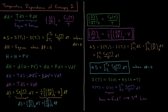We can go through a similar derivation to the previous video on the temperature dependence of entropy, and we end up with an expression for dS as a function of temperature and pressure: dS equals the constant pressure heat capacity divided by T times dT, plus one over T times the partial derivative of H with respect to P at constant temperature, minus V, times dP. Since we're expressing S as a function of temperature and pressure, S(T,P), we can write the total differential of S as dS equals (∂S/∂T) at constant P times dT, plus (∂S/∂P) at constant T times dP.